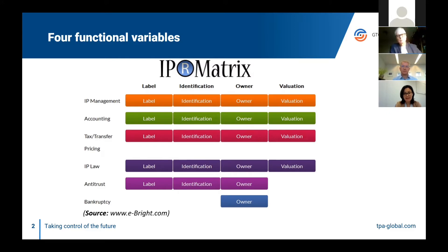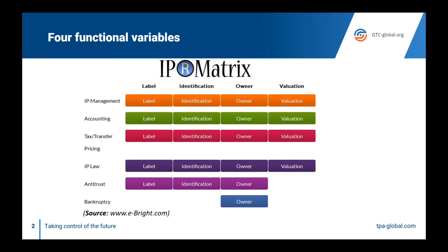To avoid that, quite some time ago, she created this matrix and called it the IPR matrix. What it helps to see is that in every category you have a different definition and that has a label — for example, a patent, a brand, or a trademark. There's the identification element — you see a logo and you recognize that this is the brand. There's the ownership question — who is the owner, which can be a registration or the DEMPE functions as we know in transfer pricing. And last is valuation, which again can be different from the perspective of different professionals. Depending on this answer, you would either say that something is an intangible or not.